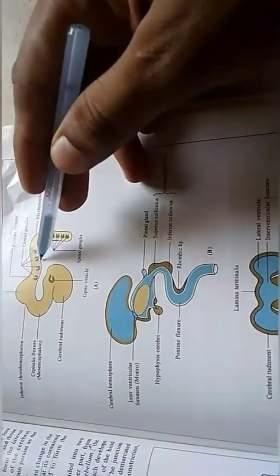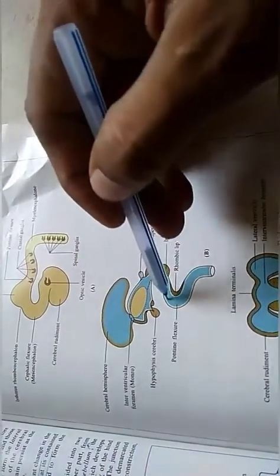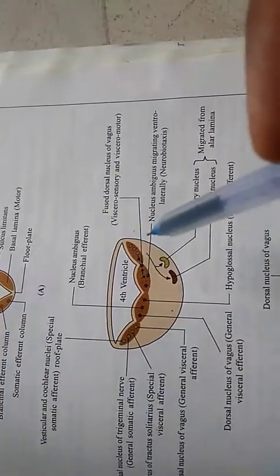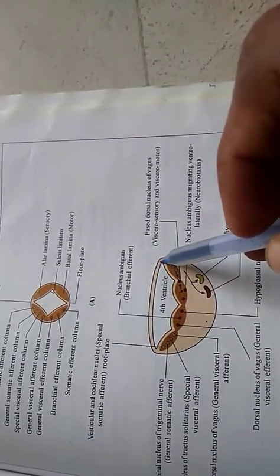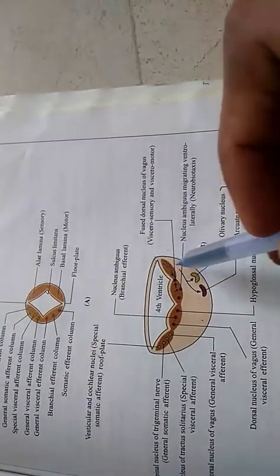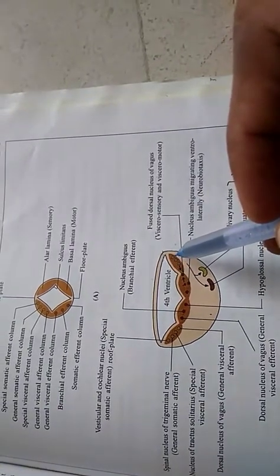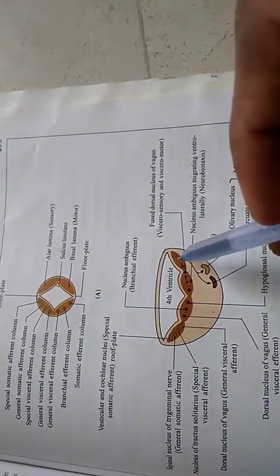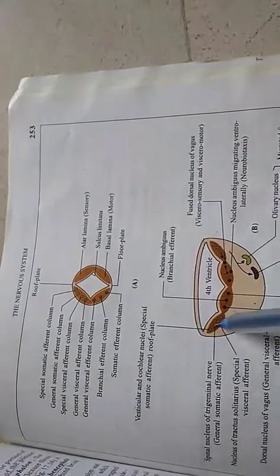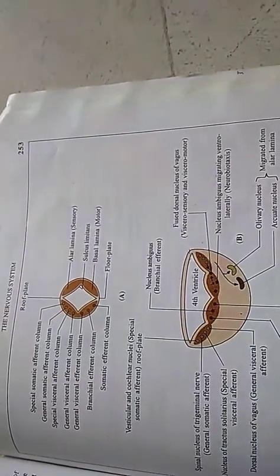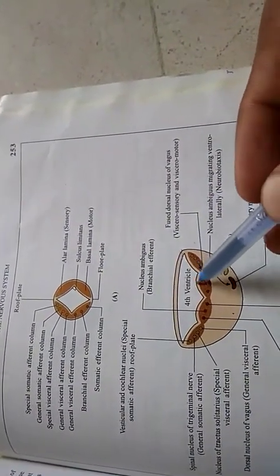Pontine flexure bends with ventral convexity during 6th week. Due to this, the roof plate stretches out and forms a diamond-shaped outline. Alar laminae diverge from each other and they come to lie in almost same plane as the basal lamina. This explains why the floor of 4th ventricle is rhomboid shape in outline.